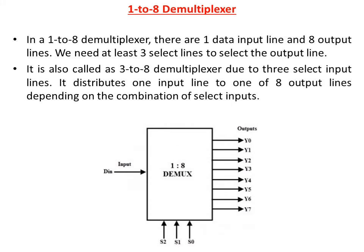1 to 8 D-multiplexor. In a 1 to 8 D-multiplexor, there are 1 data input line and 8 output lines. Since 2 power 3 is equal to 8, three selection lines are required to design the D-multiplexor. It distributes 1 input line to 1 of 8 output lines depending on the combination of selection inputs. The 8 outputs are Y0 to Y7, and the 3 selection lines are S0, S1, S2, and the data input is D-in.